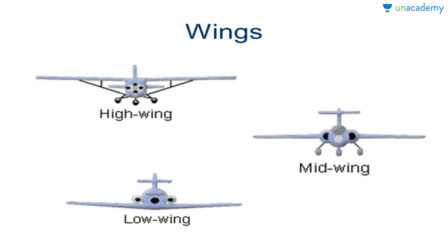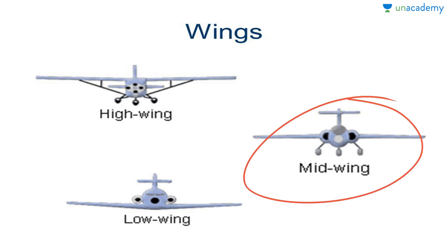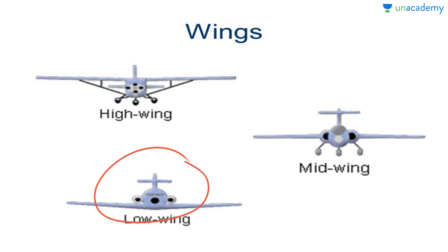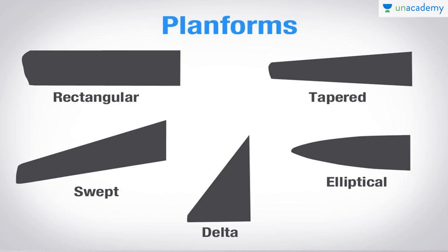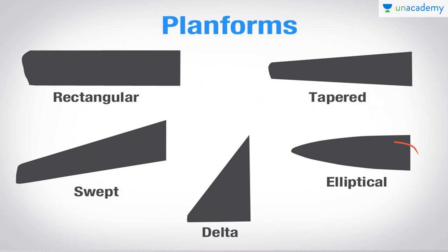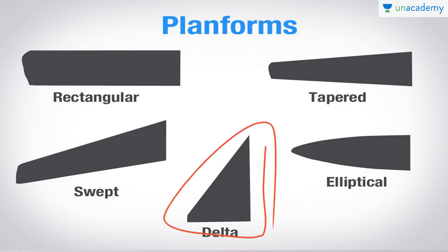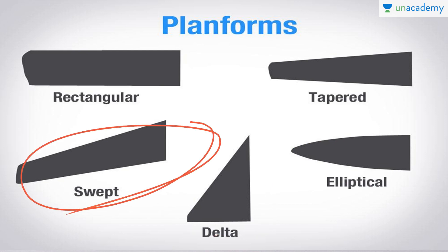Wing placement comes in three types: high wing, placed above the aircraft as in a Cessna; mid wing, used in most commercial aircraft; and low wing, where engines are mostly mounted above the wings. The planform — that is, the shape of the wing — also matters. A rectangular wing is said to produce more lift. Other planform shapes include tapered, elliptical, delta (mostly used for supersonic aircraft), and swept wing.